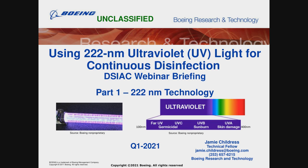This is Jamie Childress. I'm with Boeing Research and Technology, and I, along with my cohort PJ Piper from Far UV Technologies, are going to be talking to you today about 222 nanometer ultraviolet light for continuous disinfection. I'm going to give the first part of this, which is about 222 nanometer technology, and then PJ is going to take over and talk to you about various applications.